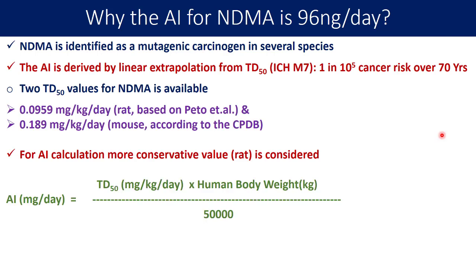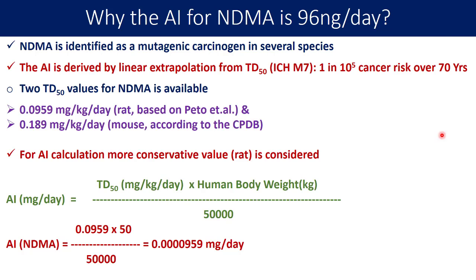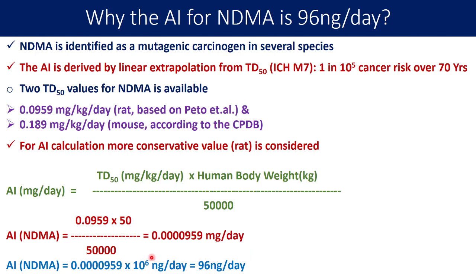This is the calculation formula for acceptable intake in milligrams per day for human consumption: TD50 multiplied by human body weight, divided by 50,000. Substituting the values — TD50 of 0.0959, human body weight of 50 kg, divided by 50,000 — you get 0.0000959 milligrams per day. Converting this into nanograms by multiplying by 10 raised to 6, you get approximately 95.9 nanograms, or about 96 nanograms per day as the limit for NDMA. This is the acceptable intake for NDMA referenced in the US FDA and ICH guidelines.